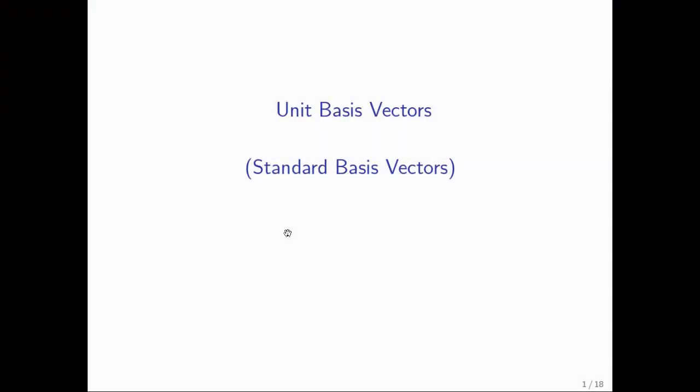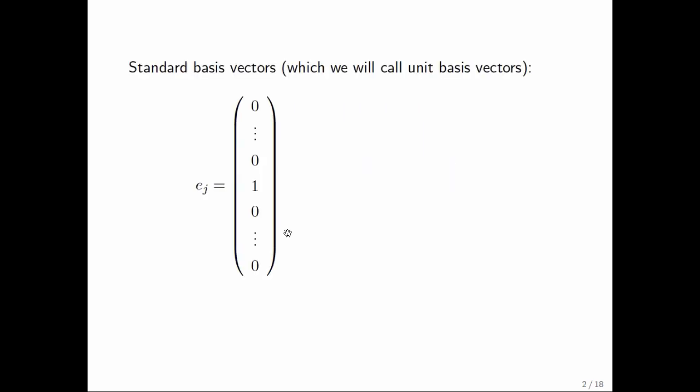So what are the unit basis vectors, or as they are more commonly called standard basis vectors? Well, they're vectors of size n, so they have n entries, that have the special property that all those entries are equal to zero, except for one of those entries.